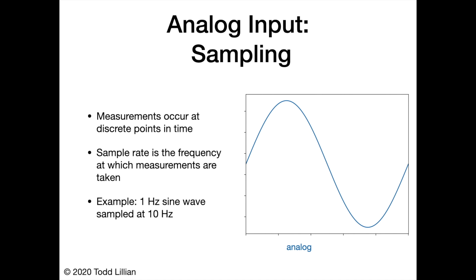Measurements occur at discrete points in time. The sample rate is the frequency at which measurements are taken. A 1 hertz sine wave, if sampled at 10 hertz, would produce the points shown in orange. That sampled data doesn't say anything about what happens in between those points — it just measures the voltage at those distinct points in time.